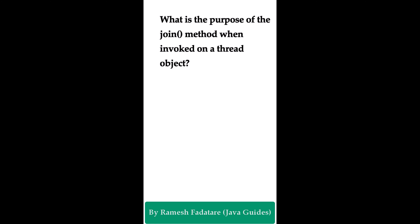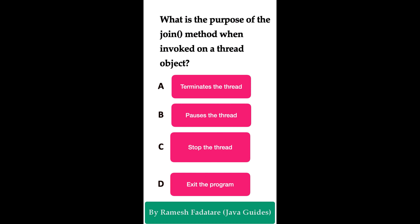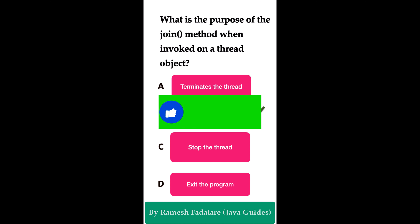What is the purpose of the join() method when called on a thread object? Option A: it terminates the thread. Option B: it forces the thread to wait. Option C: it stops the thread. Option D: it exits the program. The correct answer is option B — it forces the current thread to wait. The join() method forces the current thread's execution to pause until the thread on which join() was called has finished executing. This is useful when you want to ensure a particular thread completes before the program proceeds. Threads depending on a computation can use join() to wait for it to finish.